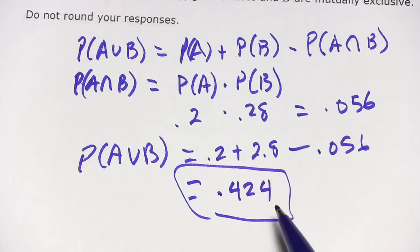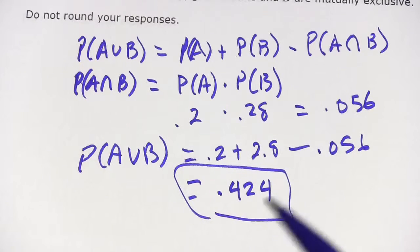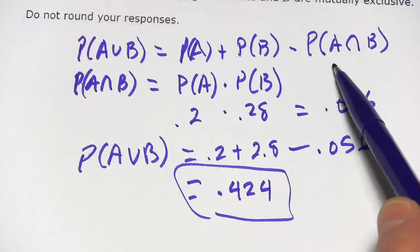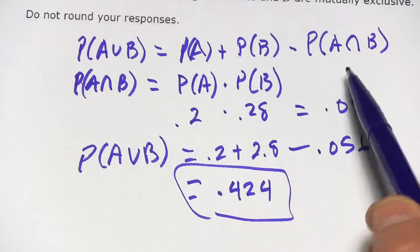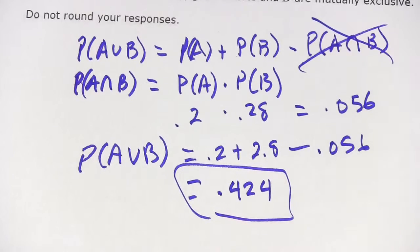So that's the probability of the union of A and B when they're independent events. What about if they're mutually exclusive? What that means is that there is no intersection. So we can use this same formula again and just forget about that part.